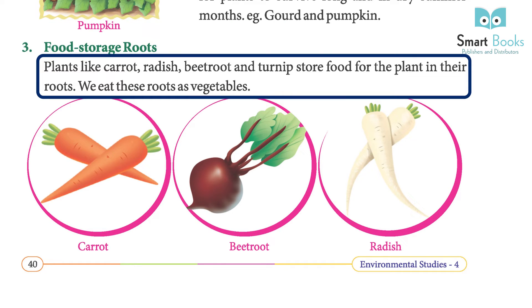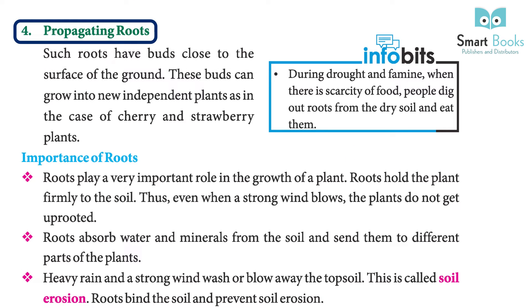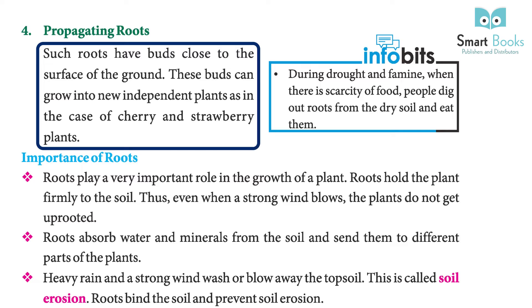Three: food storage roots. Plants like carrot, radish, beetroot, and turnip store food for the plant in their roots; we eat these roots as vegetables. Four: propagating roots. Such roots have buds close to the surface of the ground. These buds can grow into new independent plants, as in the case of cherry and strawberry plants.